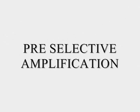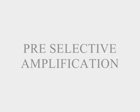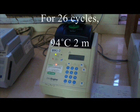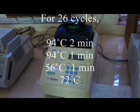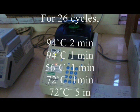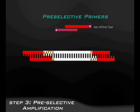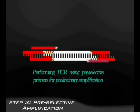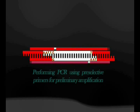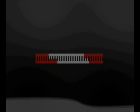Preselective amplification is the next process. In the PCR machine, for about 26 cycles, the following temperatures are maintained for this process. Preselective primers are adapters with a supplementary base, which may be adenine, guanine, cytosine, or thymine. This enables the first selection, and after this step, one-fourth of the fragments are amplified.